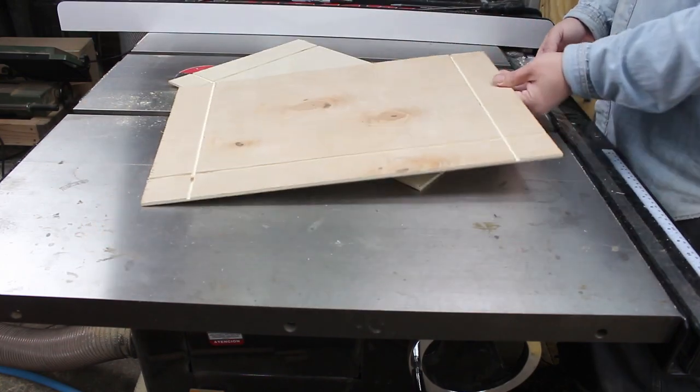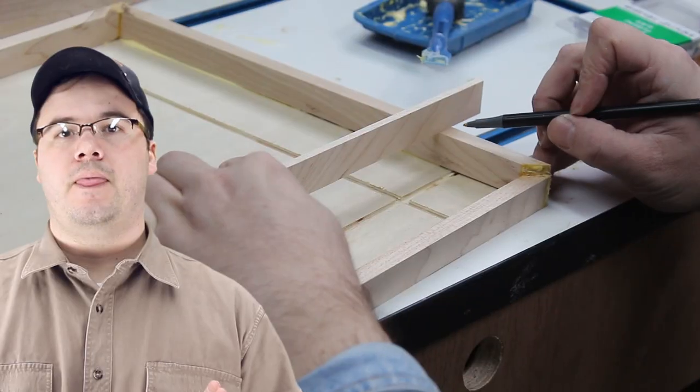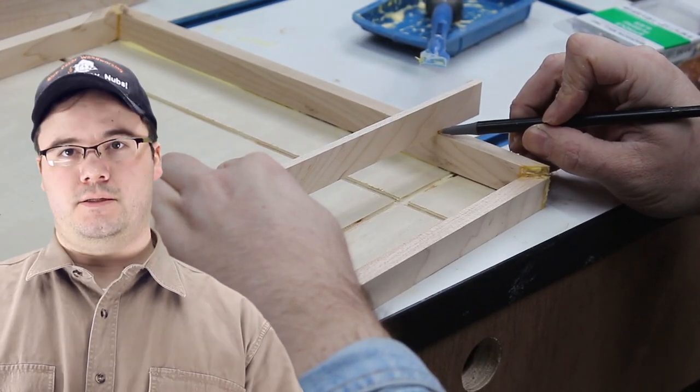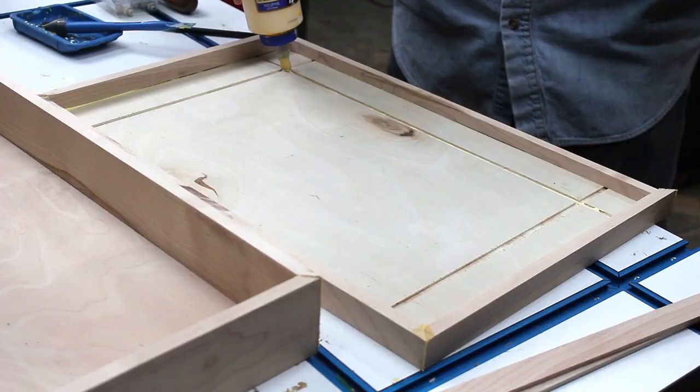Where you cut your grooves depends on the size of your laptop. You'll want a nice fit to keep it from rattling around. After the grooves are cut, we can glue those panels in place. That's going to make it easier to double check the length of our dividers before we glue those in place too.